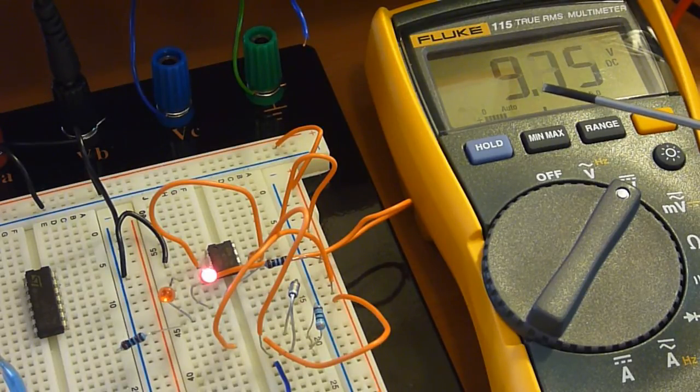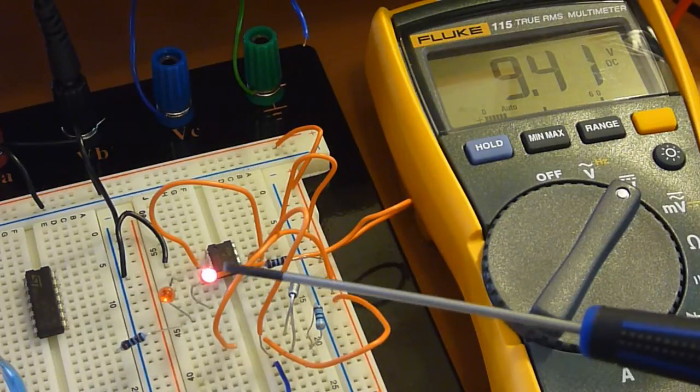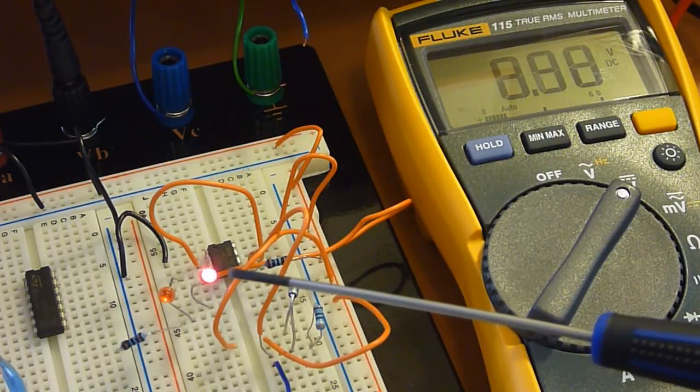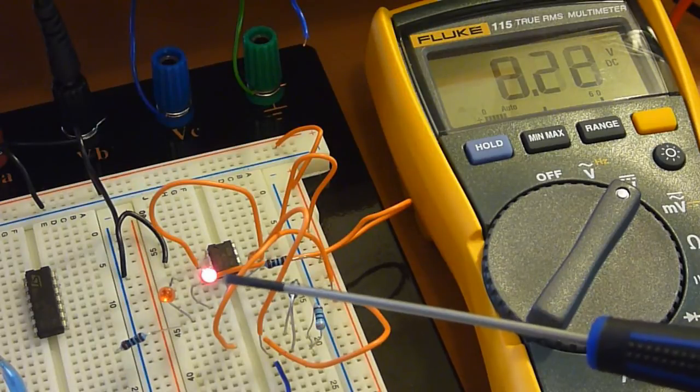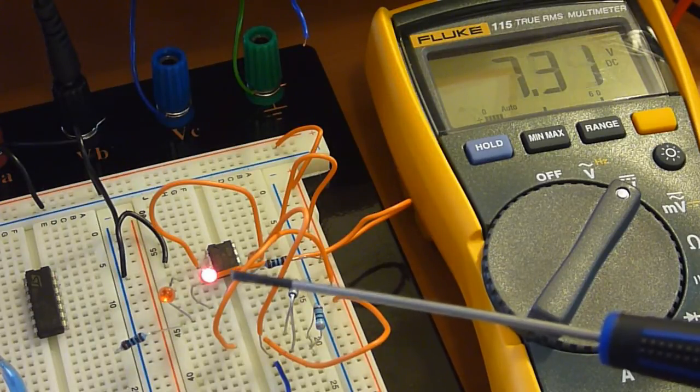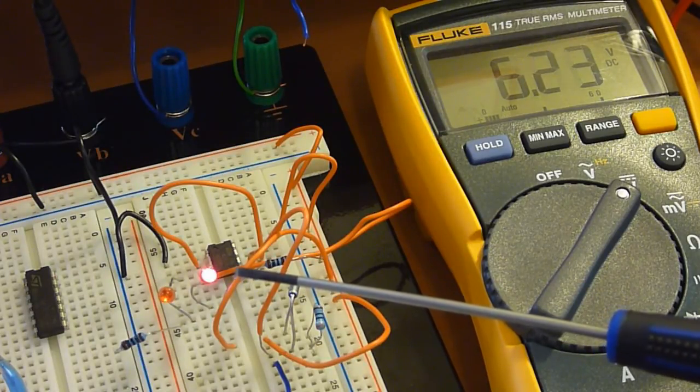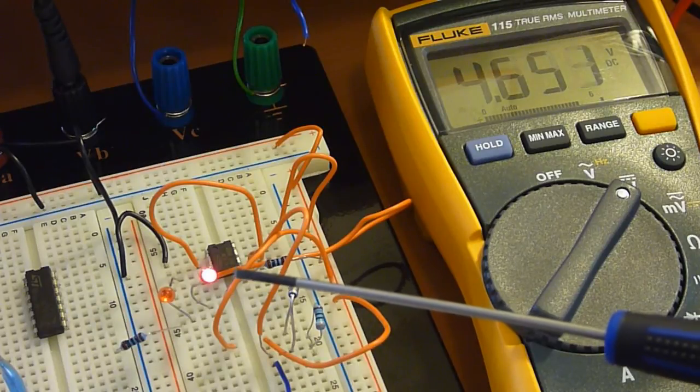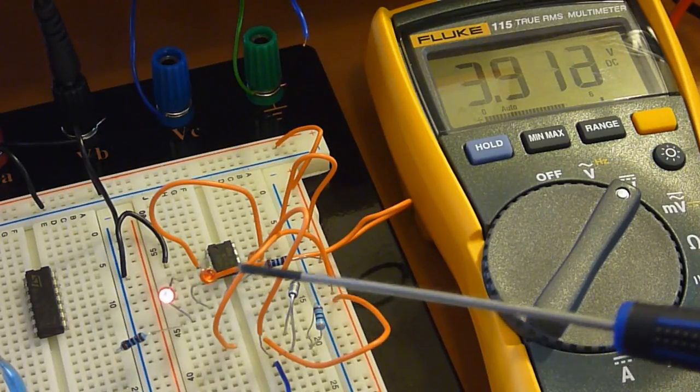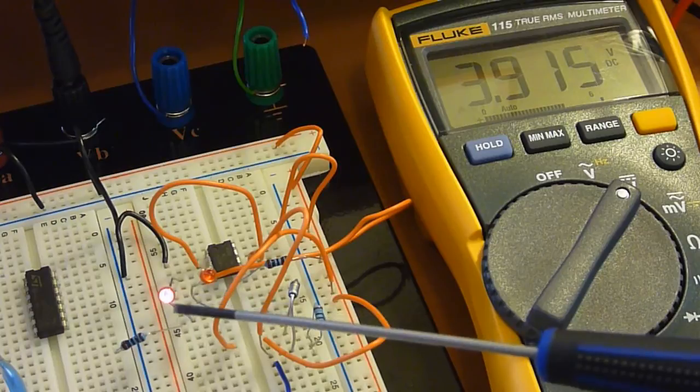And as I come back down, it still maintains its state, which is exactly what I want, until we get down to about 4 volts. Oh, there we go, about 4.3 volts. You can see it's toggled back.